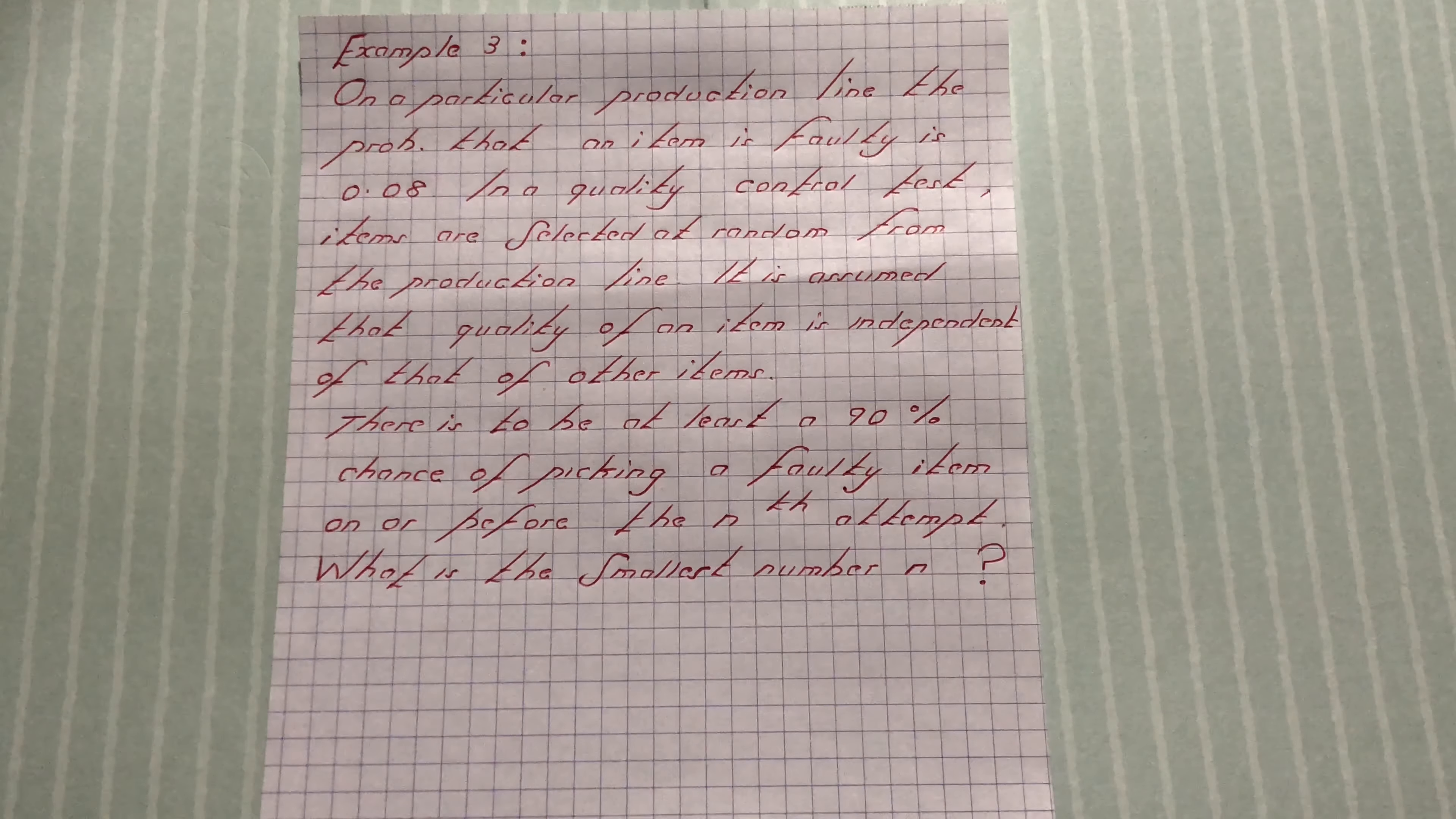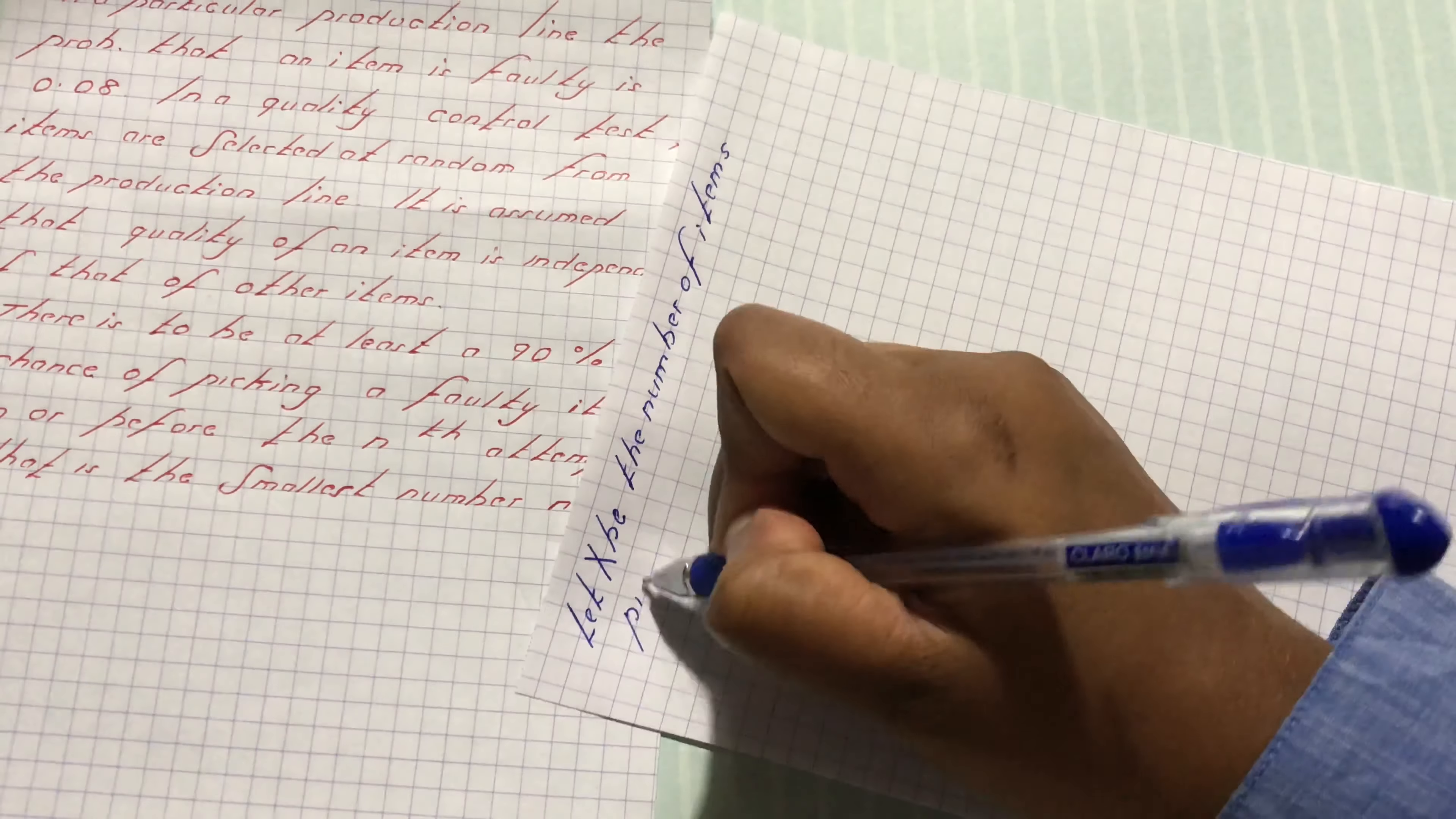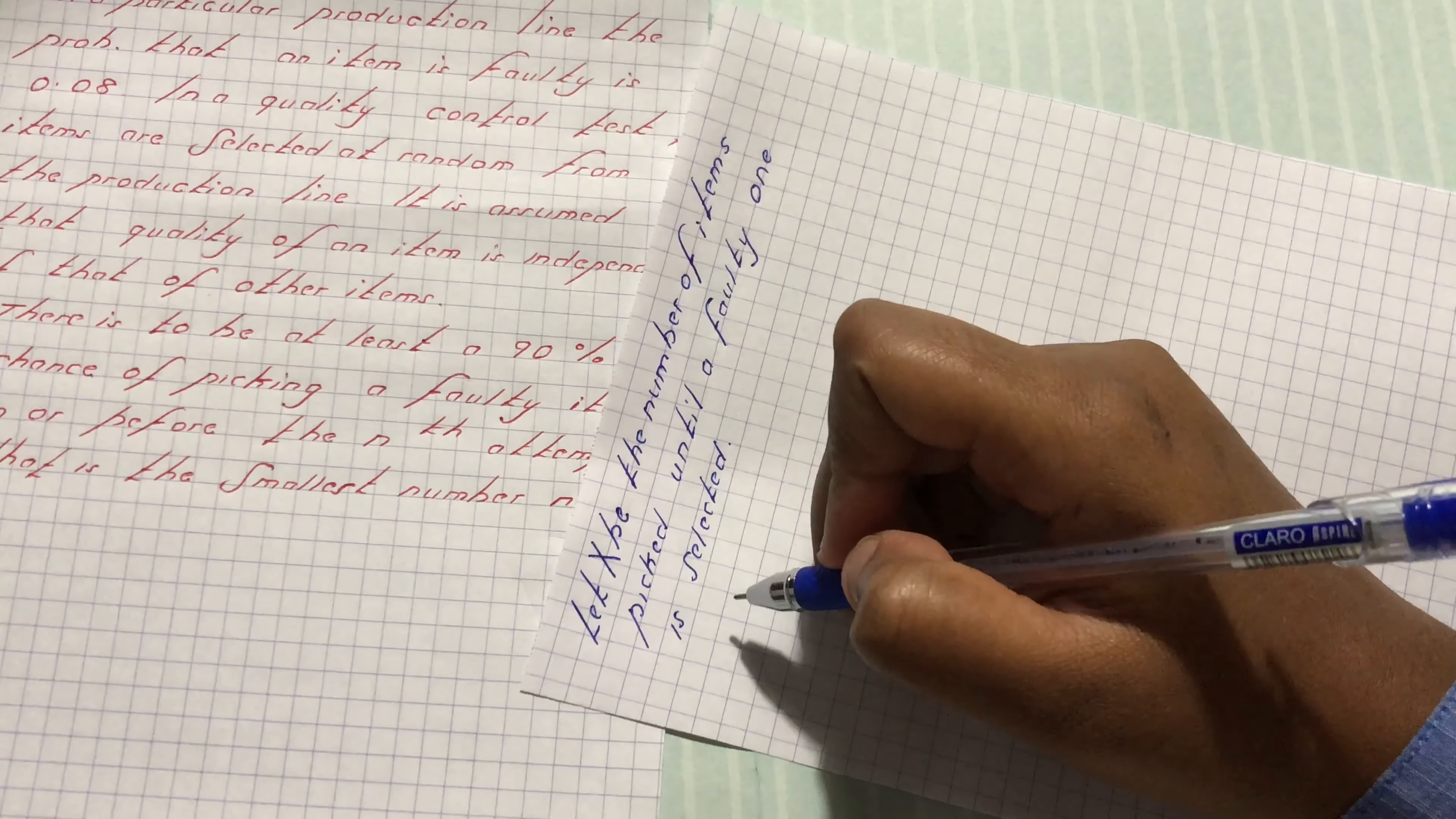What is the smallest number n? Let's begin by letting x be the number of items picked until a faulty one is selected. So using a geometric model,